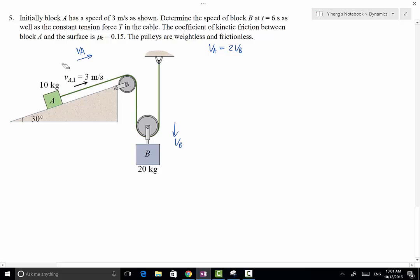So because VA is always 2 times VB, therefore VA1 is 3 meters per second, and VB1 equals 1.5 meters per second. So initially, if VA is, if block A is not at rest, block B will not be at rest either.